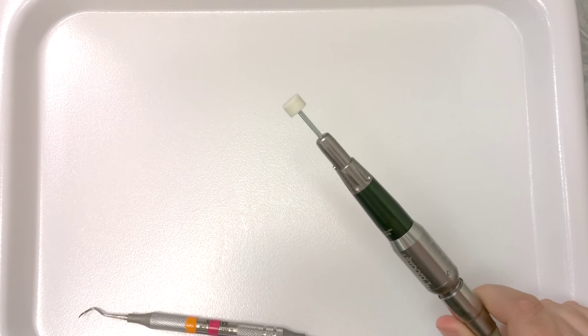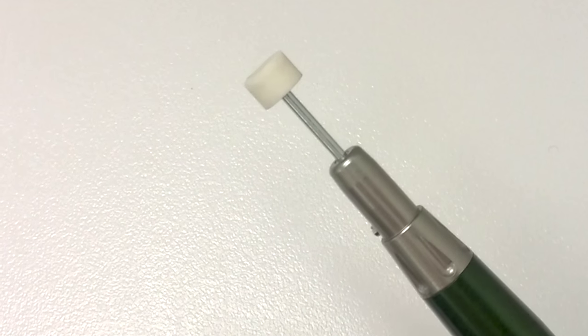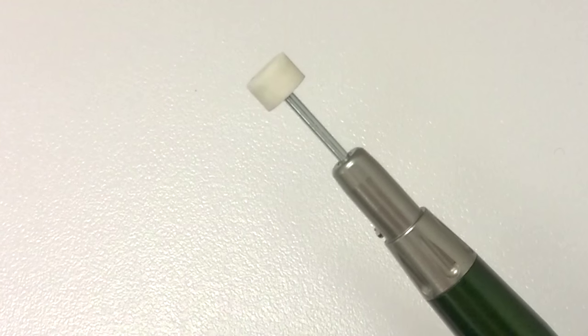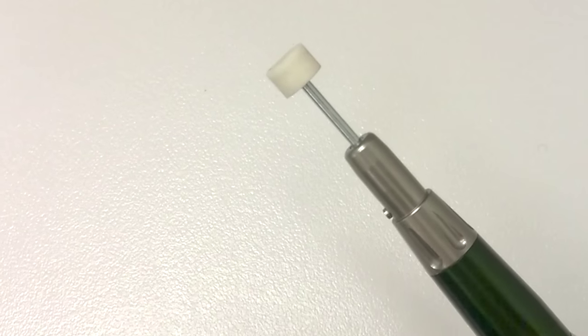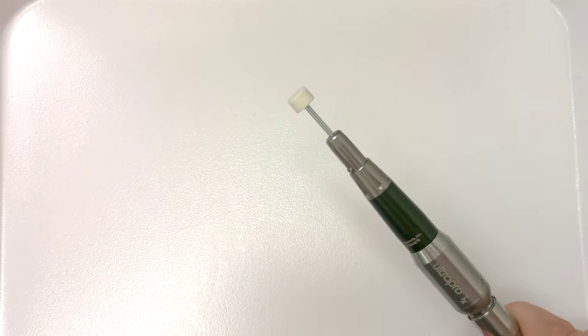If you notice on your white sharpening stones you're getting grey streaks, how to prevent that is you just submerge it in water for one minute before you start sharpening. Honestly though, the grey streaks aren't going to hurt the integrity of the stone, it's just to help with the aesthetics of it.